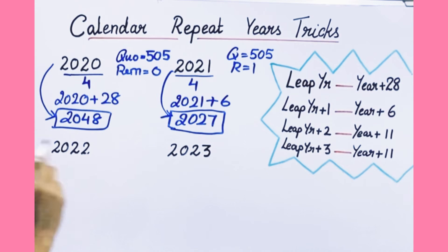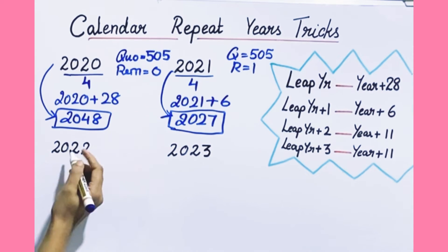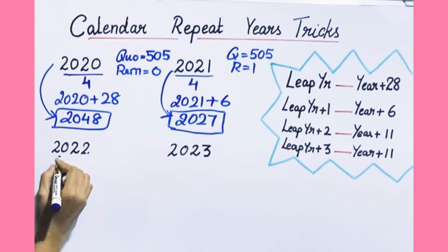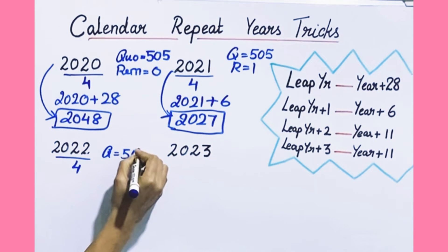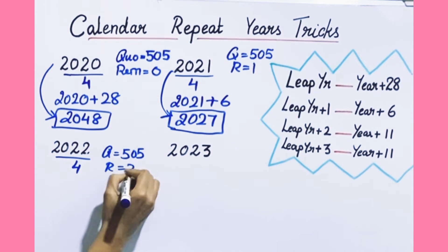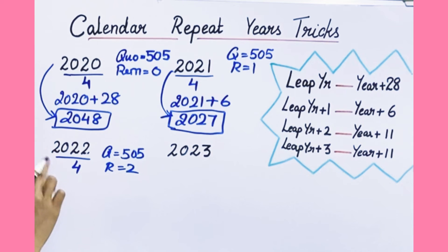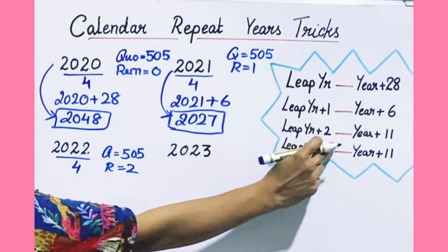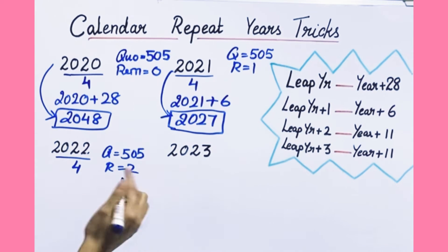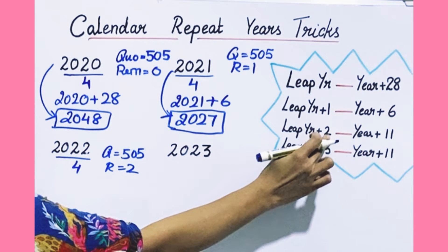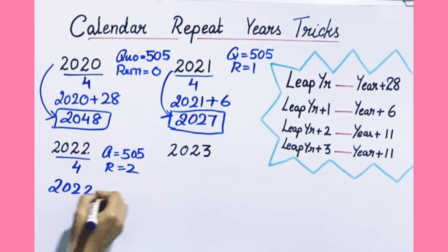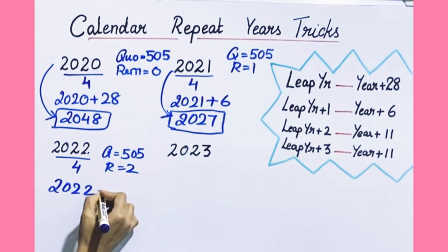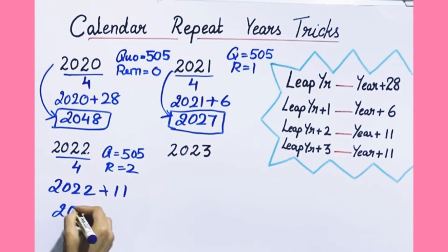Next, 2022. Let's check whether it's a leap year or not. The quotient will be 505 and the remainder is 2 — it's not a leap year. This 2022 is a year which is leap year plus 2. In this case, take the year and add 11. So 2022 repeats in 2033.